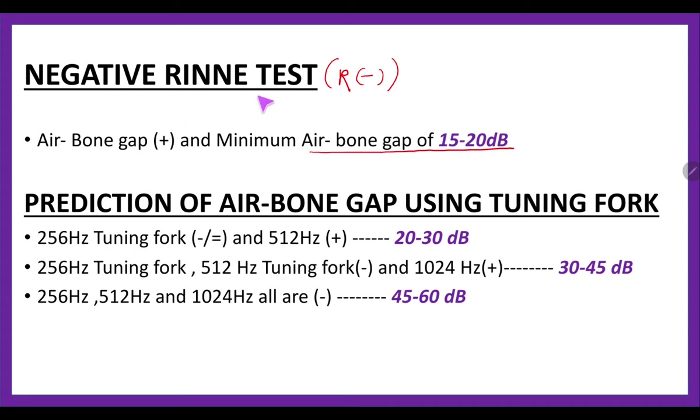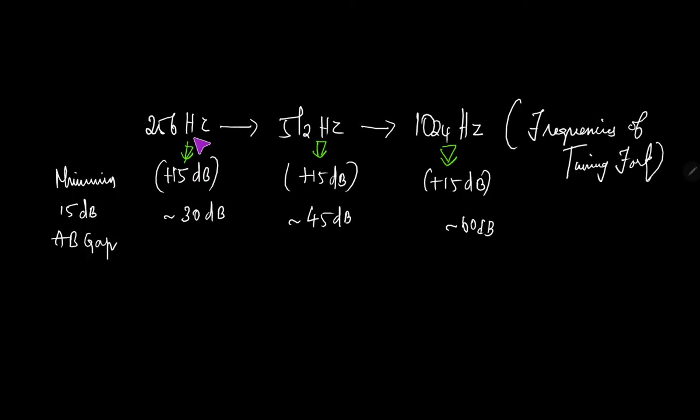If there is a negative Rinne test, there will always be an air-bone gap of minimum 15 to 20 decibels noted. Now let us see an easy thing to remember: how to predict the air-bone gap using a simple formula. These are the tuning forks we use: 256 hertz, 512 hertz, and 1024 hertz. We know the minimum air-bone gap will be 15 decibels. These frequencies vary by a factor of two, so the sequence is getting added up by adding 15 to 15. So 256 negative is somewhere 30 decibels, then add 15, 512 negative means 45 decibels air-bone gap, 1024 also negative then 60 decibels air-bone gap.